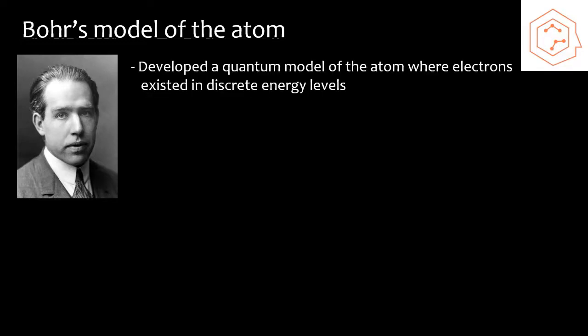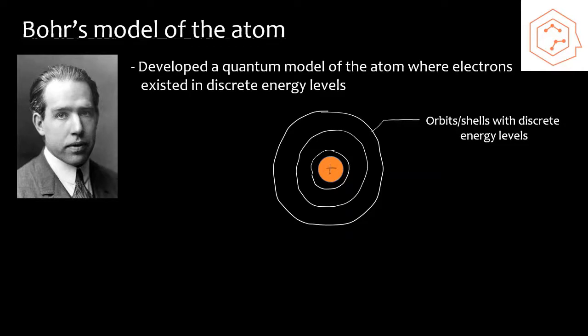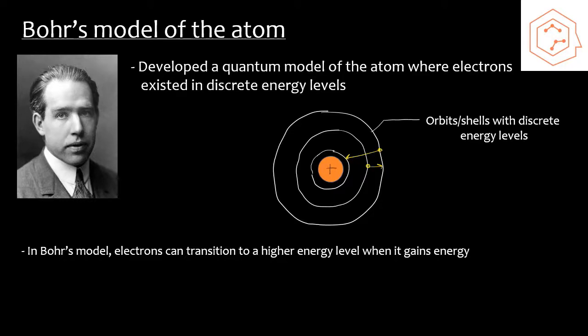All this work paved the way for Bohr's model of the atom. Niels Bohr created the first quantum model of the atom where the electrons were found to exist in discrete energy levels, as opposed to previous models where the electrons were scattered randomly throughout the system. Here's a general depiction of Bohr's model where we see that there are these rings around the nucleus which are referred to as orbits or shells, and they have discrete energy levels. In his model, it's also possible for these electrons to transition to a higher energy level when they absorb a specific quantity of energy. We could see here that an electron in this orbit could transition to a higher energy level further away from the nucleus. It is also possible in the opposite sense for the electrons to transition to a lower energy level.